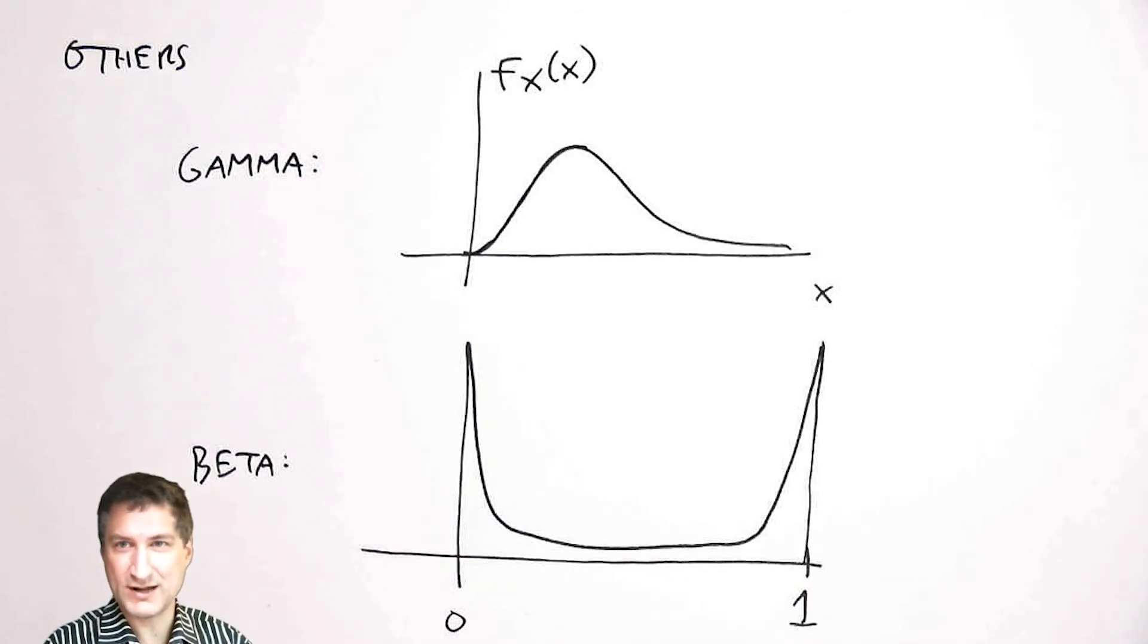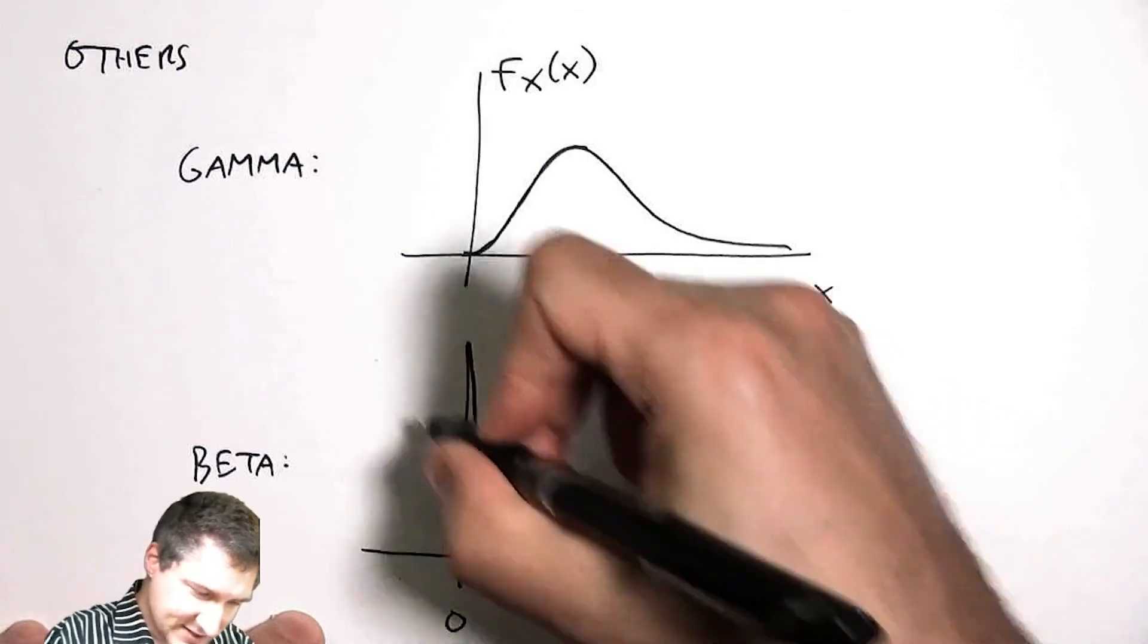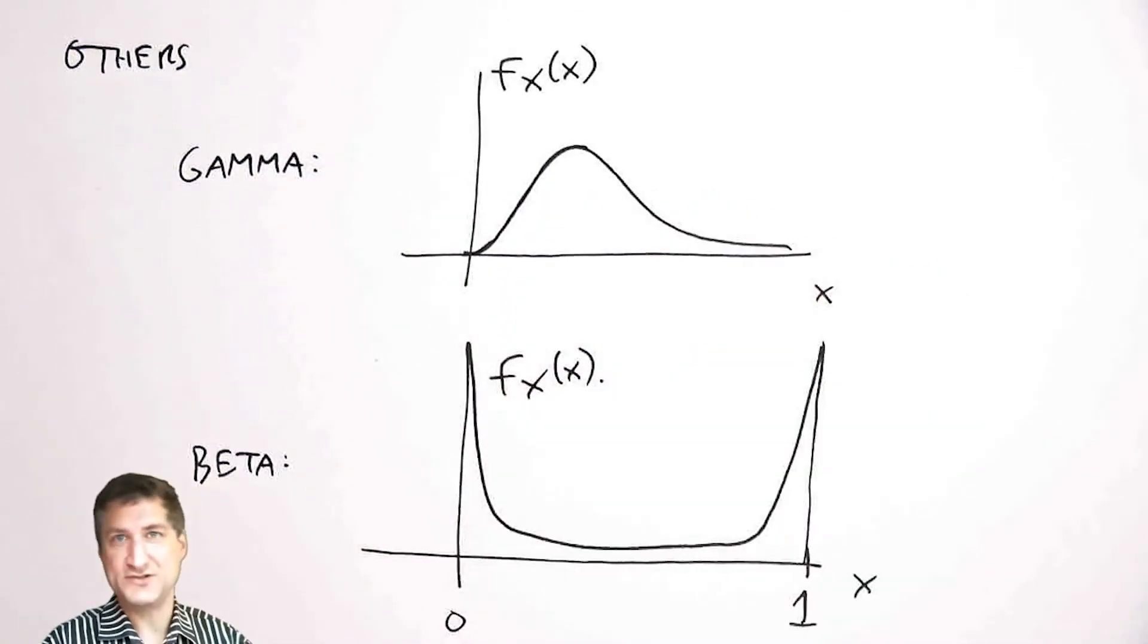The formula for this is super complicated so I'm not going to bother to write that down either, but the one that's really important is called the Gaussian random variable and I'm going to spend a couple lectures on talking about that because it's so important in science and engineering. Be sure to tune in for that.